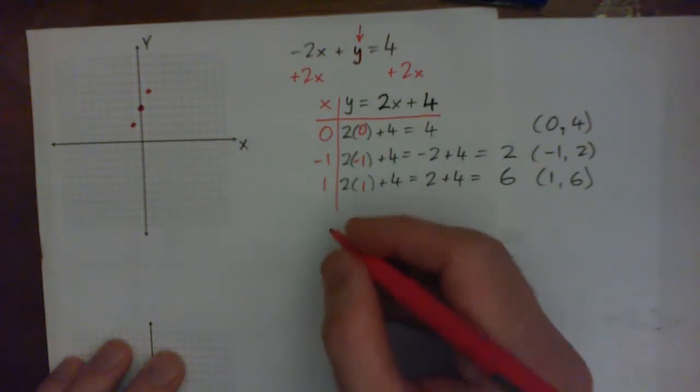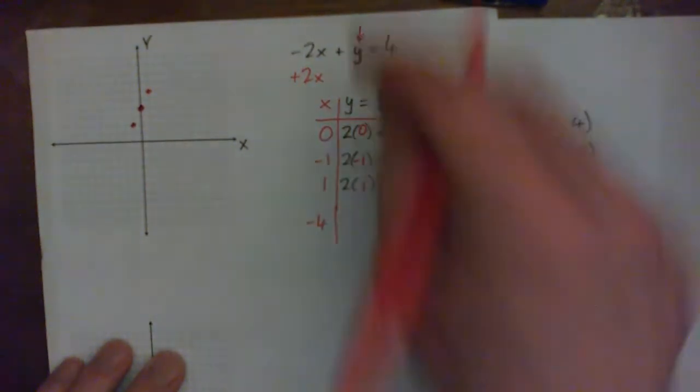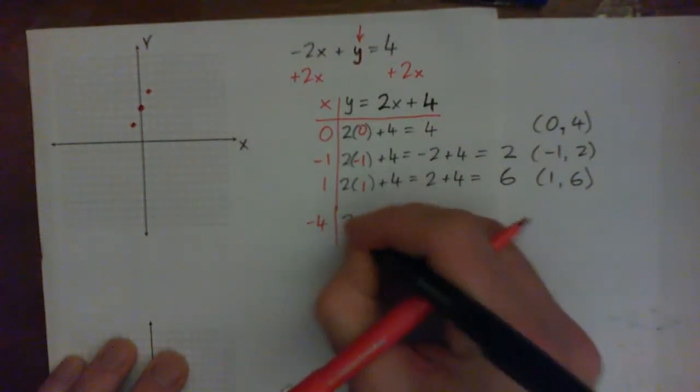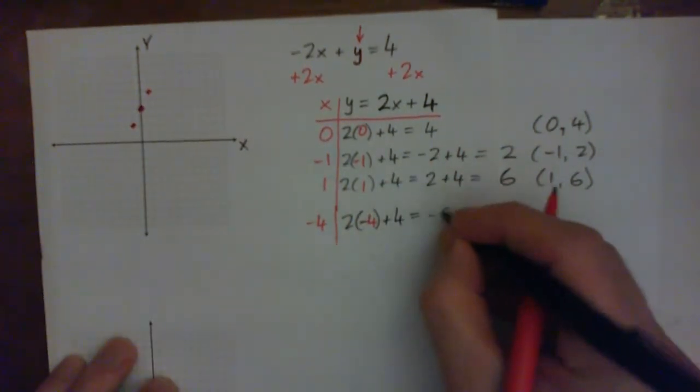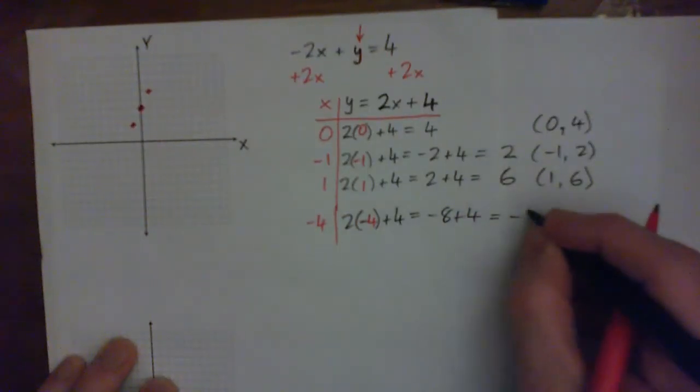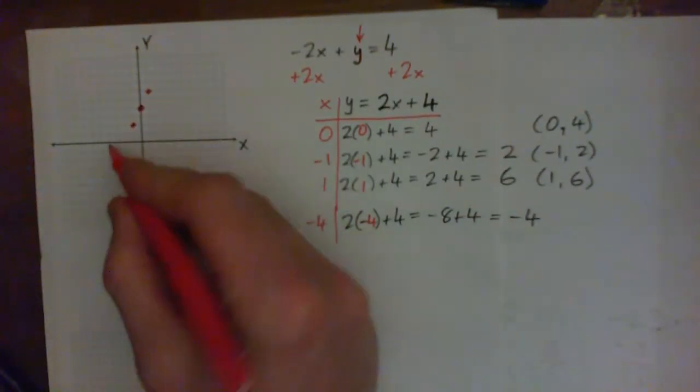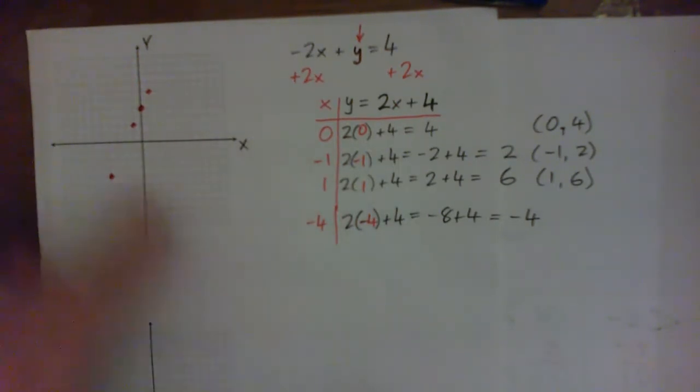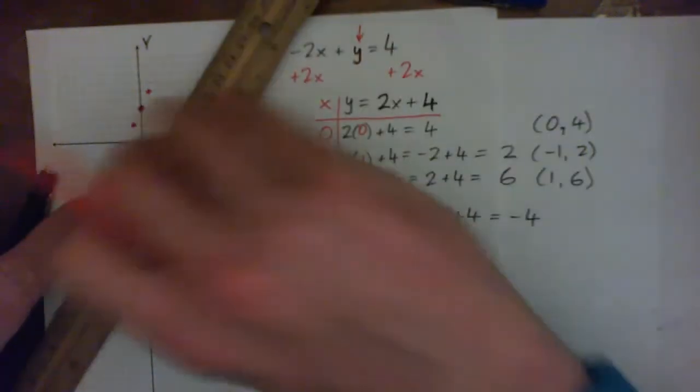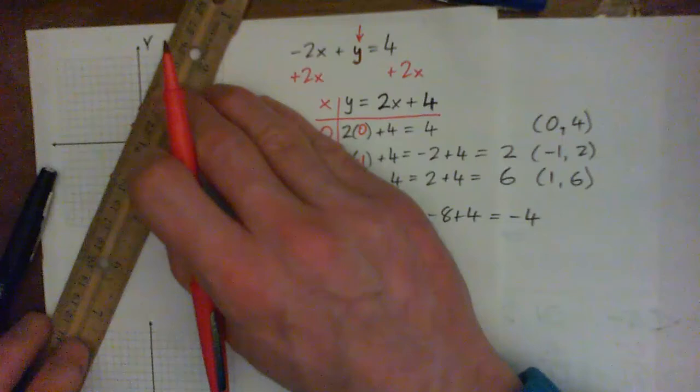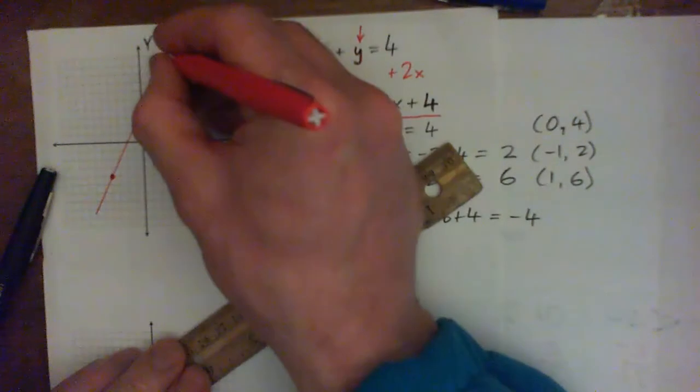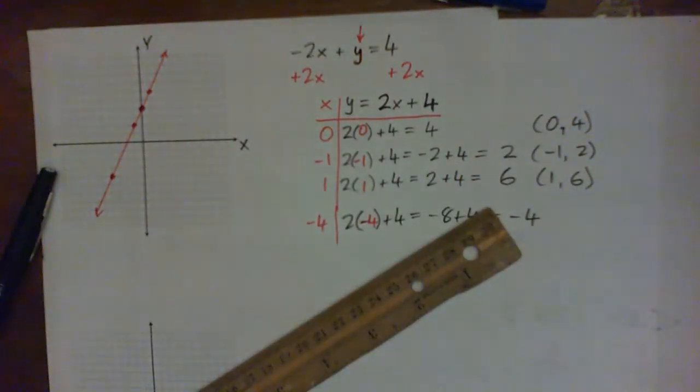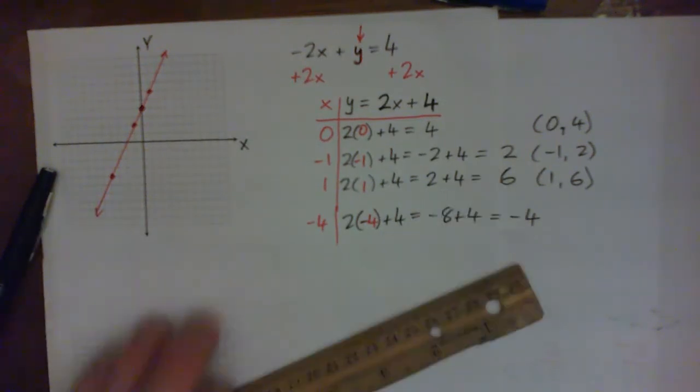Even if I threw in, say, negative 4, just for fun. So that's 2 times negative 4 plus 4, which is negative 8 plus 4, which gives me negative 4. So negative 4, negative 4 is also a point. And look, it's in line with the others. Especially when you're taking a test, do a bunch of points just to be sure. Because if they're all in a straight line, then you've probably done a good job. So that's the line.